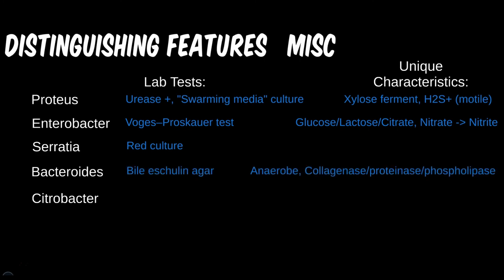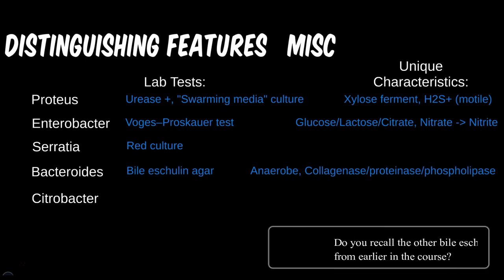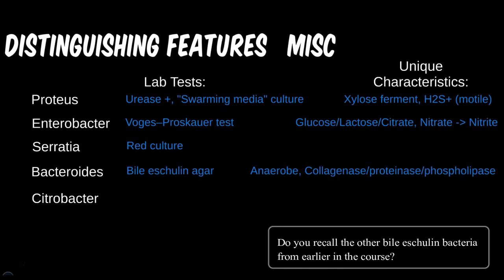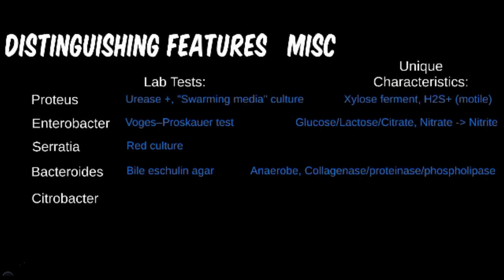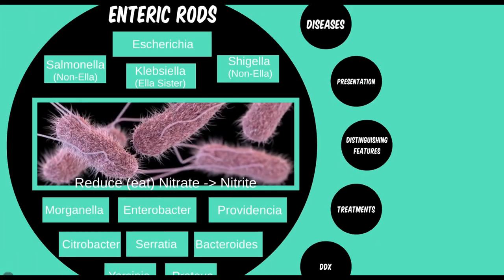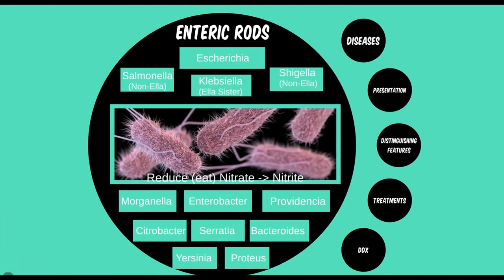Bacteroides is an anaerobic bug found as normal flora in the gut. Because of some of the enzymes it possesses, when it is displaced into other tissues, it can begin to wreak havoc. Citrobacter is pretty low yield as well and can also ferment lactose, but really just remember that everything here causes UTI. There were a fair amount of new tests in this module, mainly needed when distinguishing between other bugs in this family, but can sometimes help with those outside of the module as well.